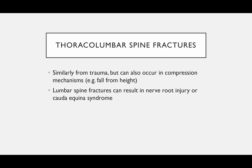Thoracolumbar fractures are treated similarly. At the thoracolumbar junction — like L1 — it's an area where you transition from a very protected area to a mobile area, so it's a transition zone where you can get injuries. For instance, falling from a height can cause an L1 burst fracture.